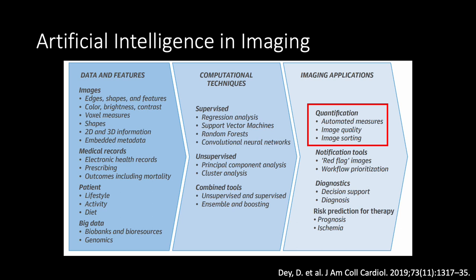What is artificial intelligence in imaging used for? There are four main applications. We're going to focus on quantification for image sorting and measurements, but it can also be used for identifying red flags or as notification tools, and for diagnostics in terms of determining what to do with a patient, diagnosing conditions, and predicting therapies.